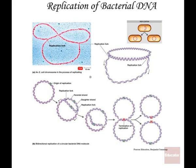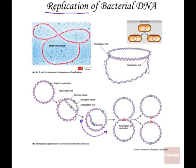Replication of bacterial DNA is very similar to replication of eukaryotic DNA. Basically, we need to copy both sides of the DNA strands. We get this unwinding of the DNA and a replication fork. Then we have a copying of both sides of the DNA in a circular motion. We flip the circles, and then we have a complete copy of the DNA in the daughter cell.